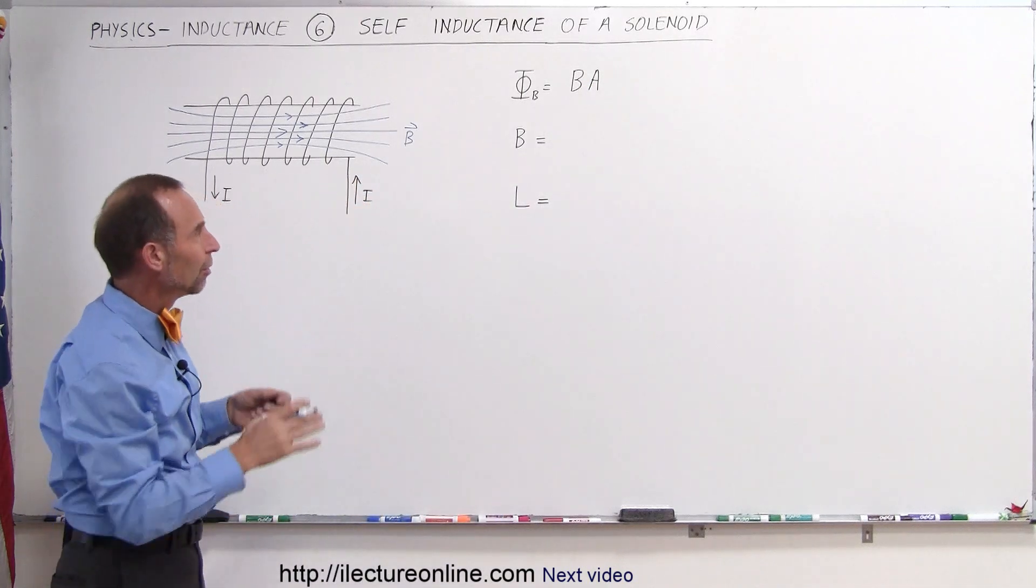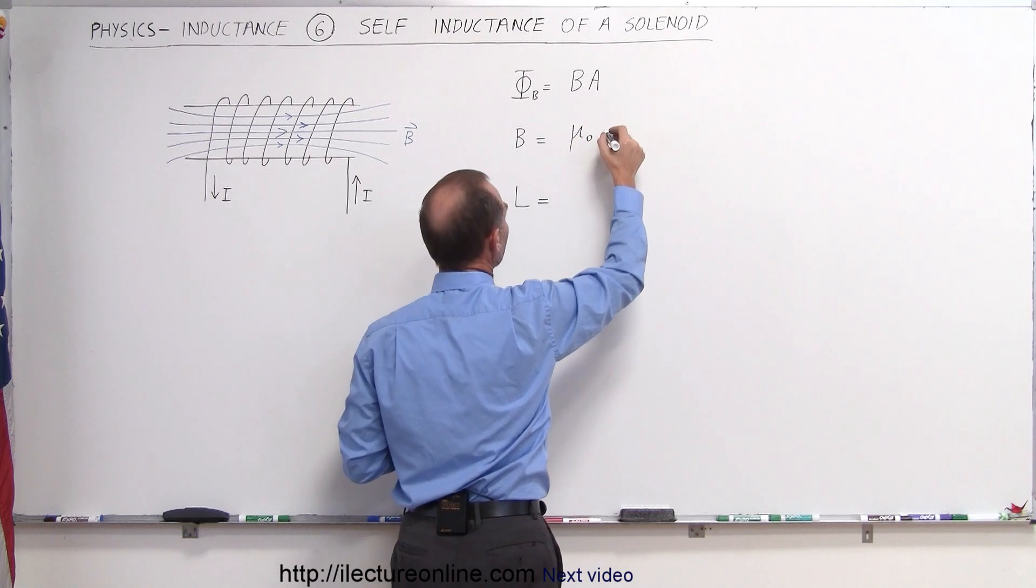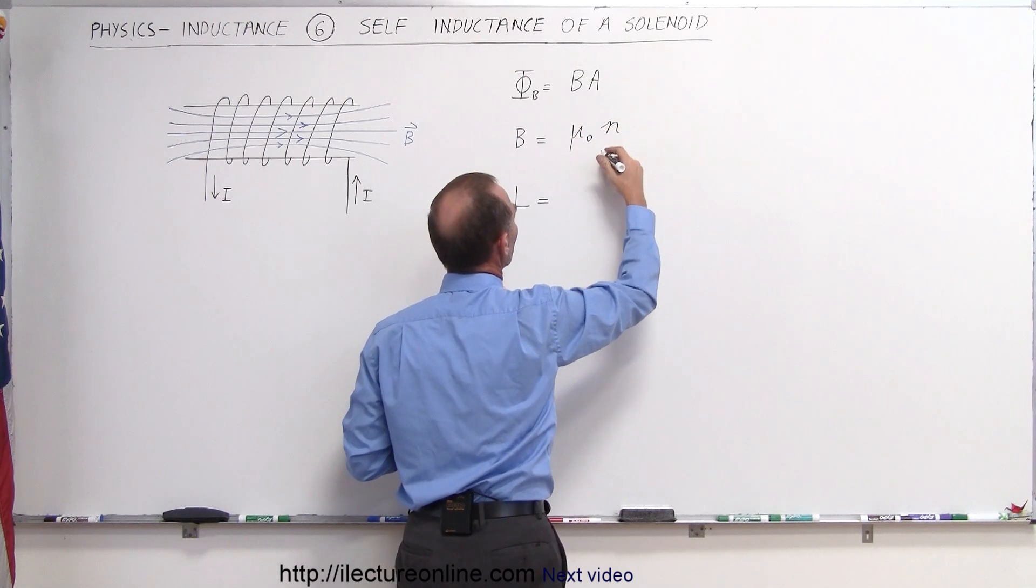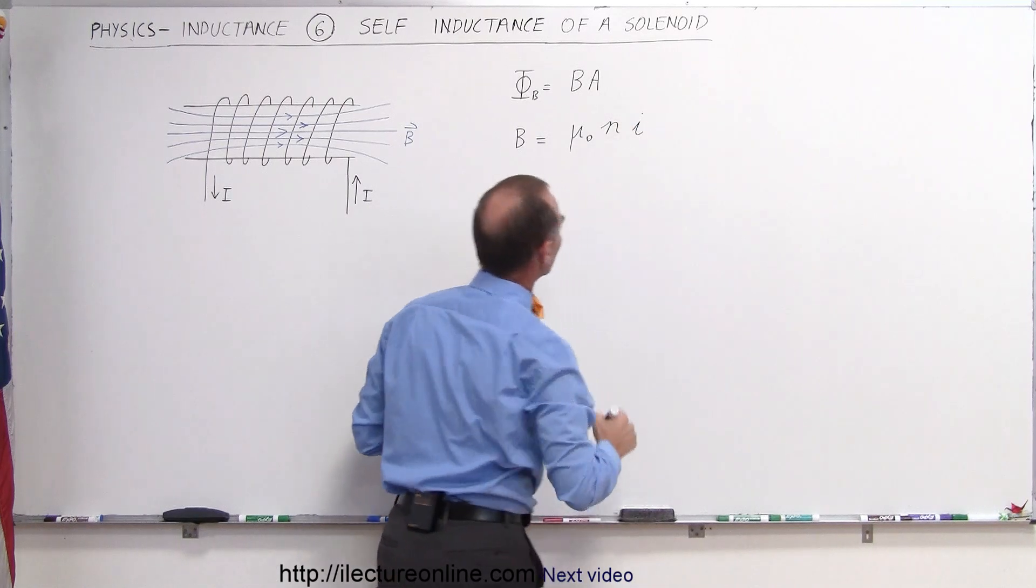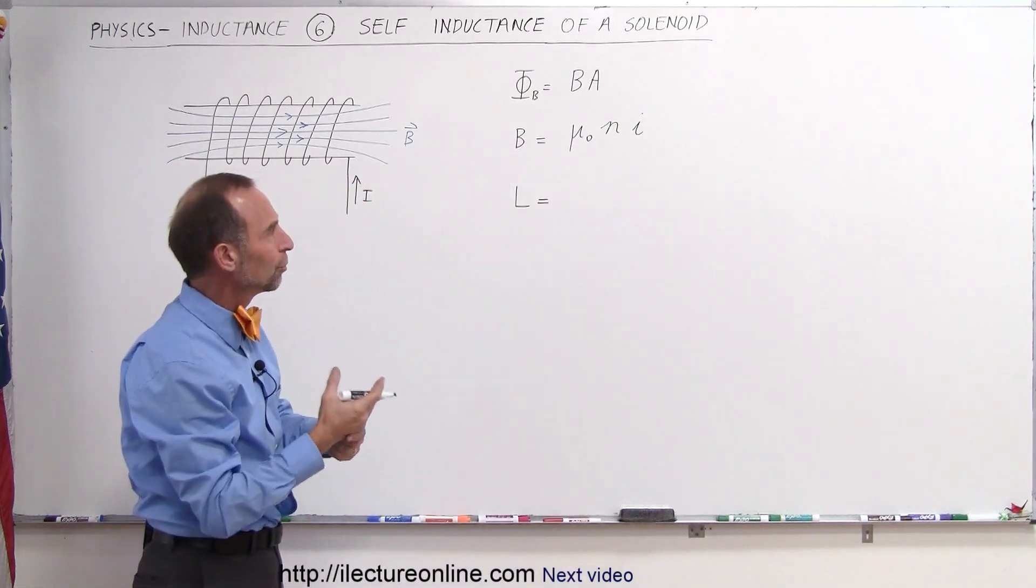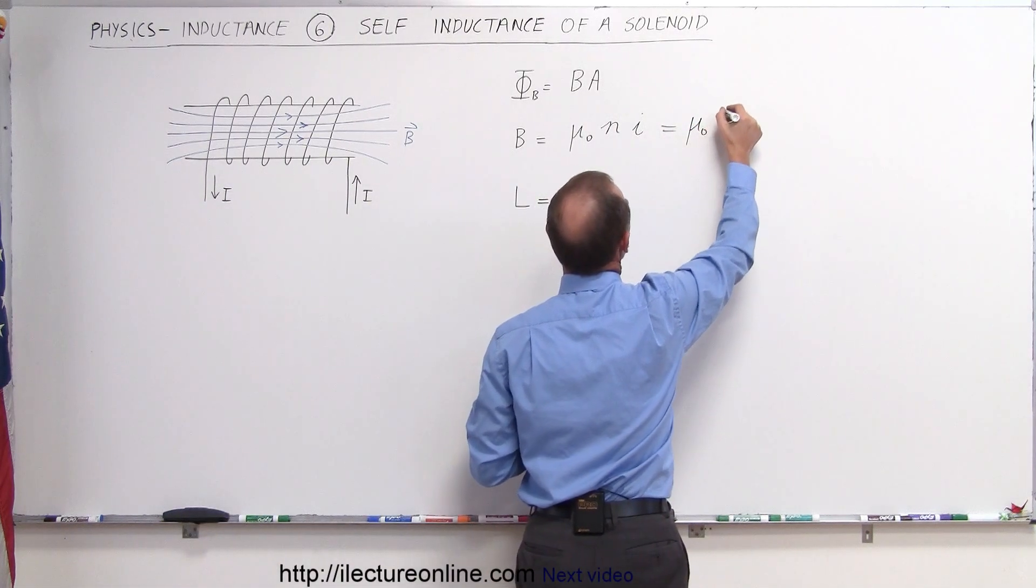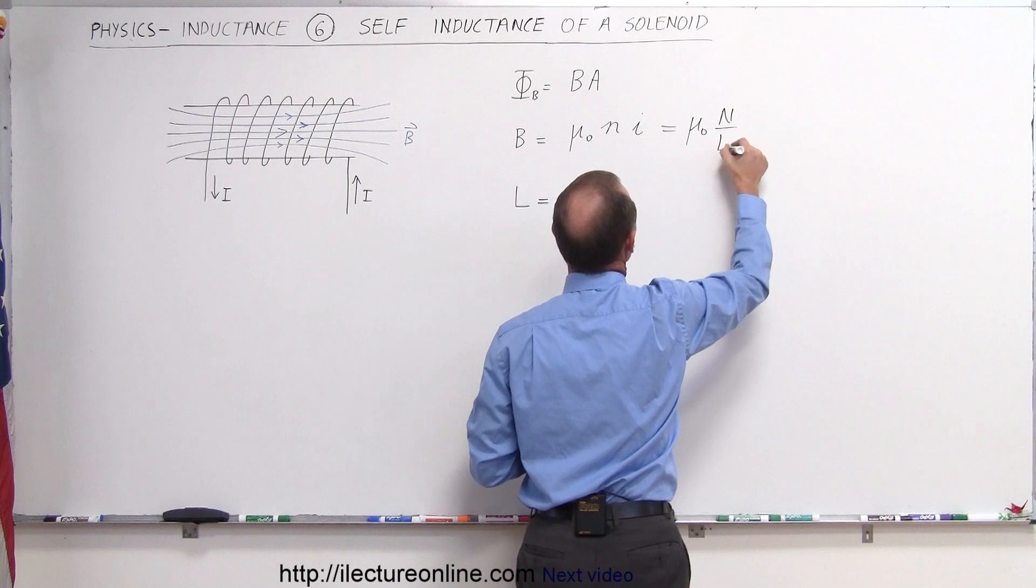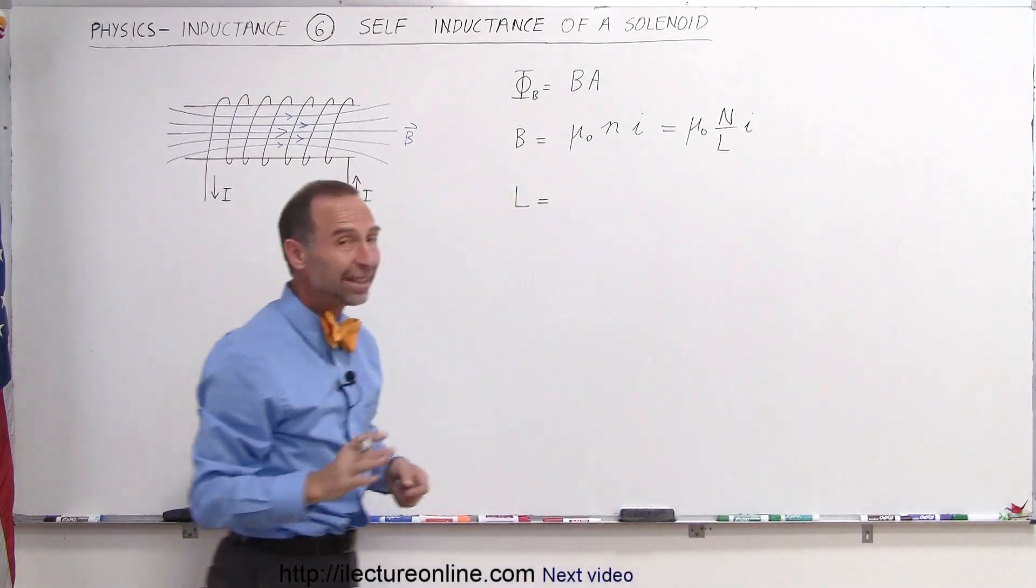the magnetic field for a solenoid is equal to mu sub-naught times the number of loops per unit length times the current through the loop. Now, of course, the number of loops per unit length, we can write that as mu sub-naught times the total number of loops divided by the length of the solenoid times the current I. And finally,